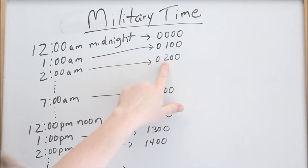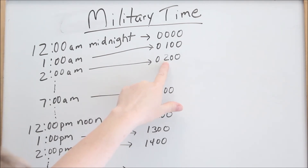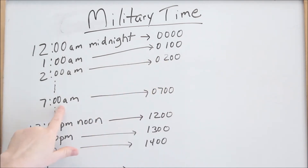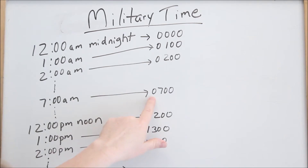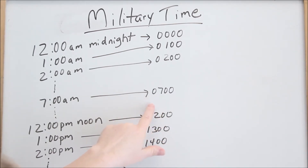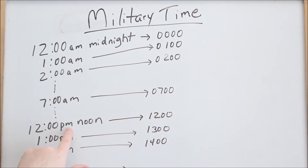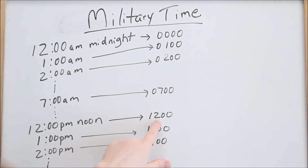2 a.m., you're two hours in the day — 0200. If you think of these first two columns as your hours, you're in the second hour of the day. Then 7 a.m., you're at 0700 because you're in the seventh hour of the day. Then you keep going: 8 a.m. is 0800, then 0900. Then 10 a.m. would be 1000, all the way to where 12 p.m. noon is 1200, because these first two columns tell you your hours — we are in the 12th hour of the day.